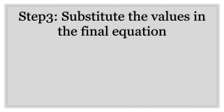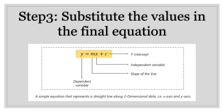The third and final step to calculate line of best fit is substituting all of the values in the final equation. The final equation is y equal to mx plus c. You substitute the values that you got in step one and step two in this equation and you get your line of best fit. Now that we have seen how to calculate line of best fit, we will look at an example to understand how this helps us make predictions.